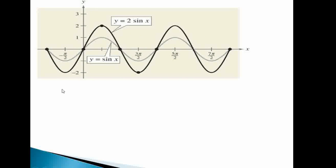Plotting y against x, you can see that the curve y = sin x is lower in amplitude compared to y = 2 sin x, because it doubles the sine values throughout. The amplitude of y = 2 sin x is doubled compared to y = sin x.